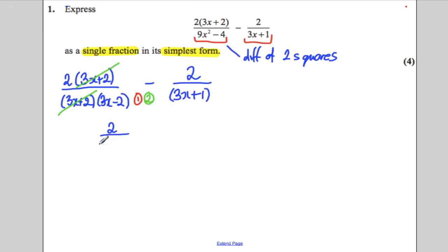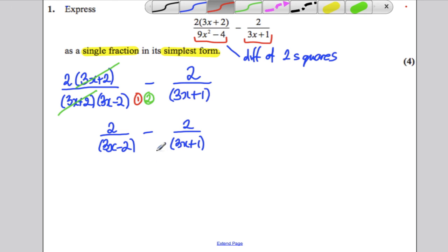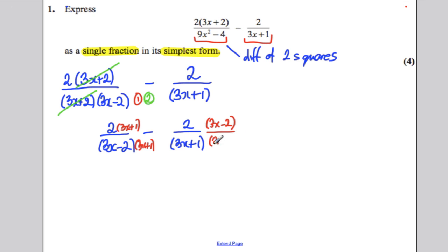Then you would write 2 over 3x subtract 2, subtract 2 over 3x plus 1. Now you're trying to add fractions. They're as simple as possible. So what you need to do is make them have the same denominator. This one needs to be multiplied by 3x plus 1 on top and bottom, and the other one needs to be multiplied by 3x subtract 2 on top and bottom.